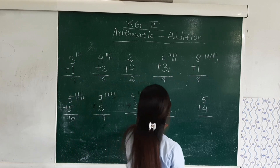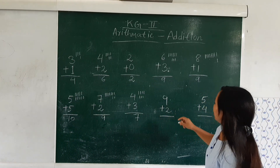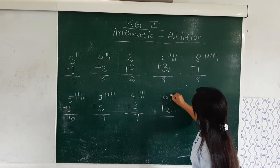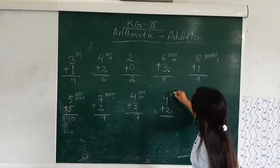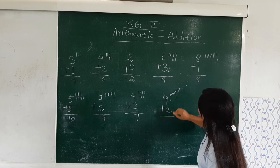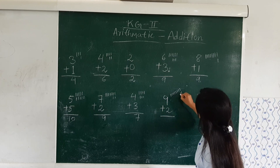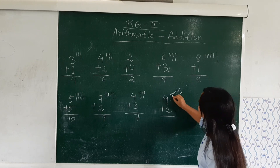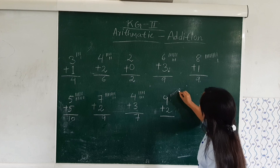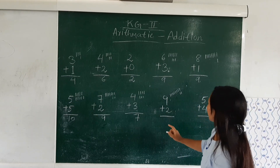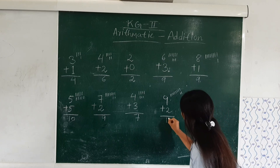Here we have 9 plus 2. We will merge 9 times: 1, 2, 3, 4, 5, 6, 7, 8, 9. Here we have 2. Now we will count all together: 1, 2, 3, 4, 5, 6, 7, 8, 9, 10, 11. We have 11 here. The result is 11.